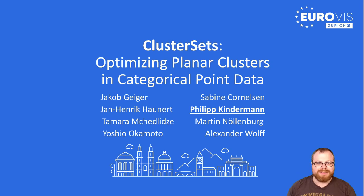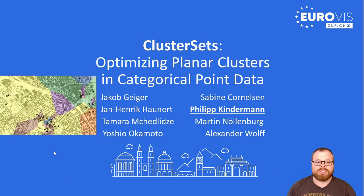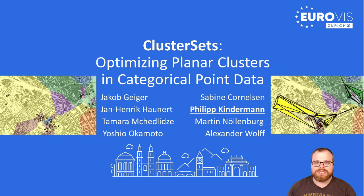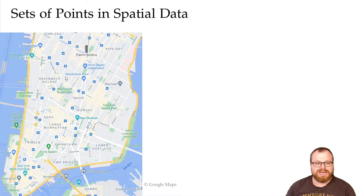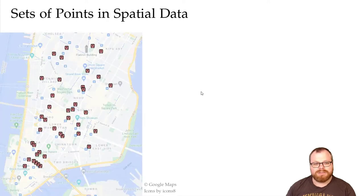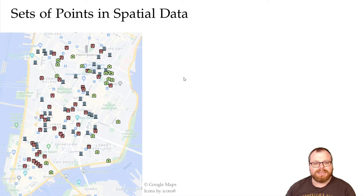In this talk, we want to explore different ways to visualize categorical point data such that close points are clustered. Imagine you have a map, for example, of Manhattan here, and there are a bunch of points of interest that you want to visualize. This gives us different sets of points.